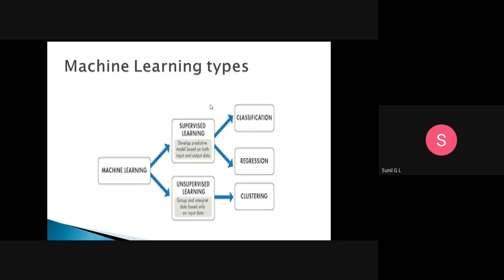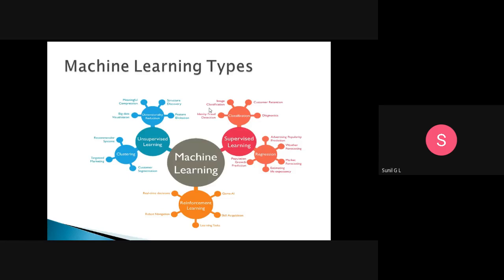These are the different types of machine learning. In supervised learning, we have classification and regression. In unsupervised learning, we have clustering and dimensionality reduction. Applications of regression include population growth prediction, life expectancy estimation, and market forecasting — for example, whether the market will fall next six months, or whether it will rain next week. Also, advertising popularity prediction — what is the popularity of a product if you use a particular advertisement.